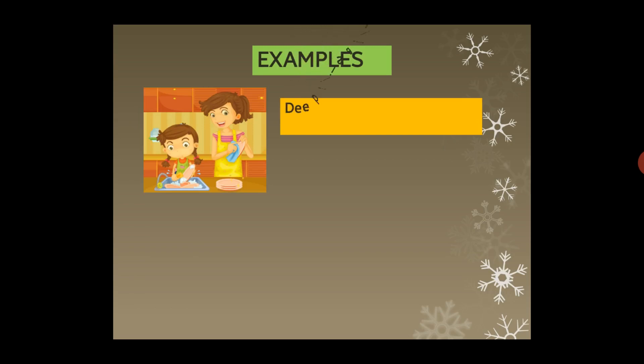Now here is a girl — Deepti is a girl. She is very kind. She is helping her mother in kitchen work. The purple-colored words are pronouns. In the first sentence, you use the noun 'Deepti' so we know who we're talking about, but from the second sentence onward, you use the pronoun 'she'.